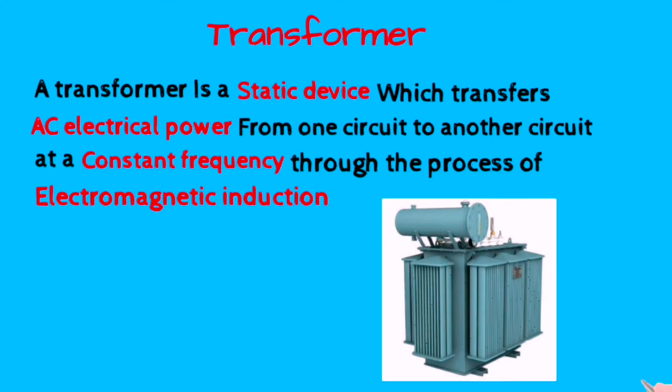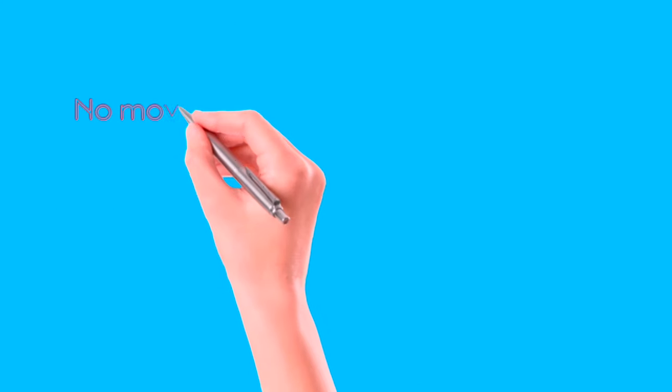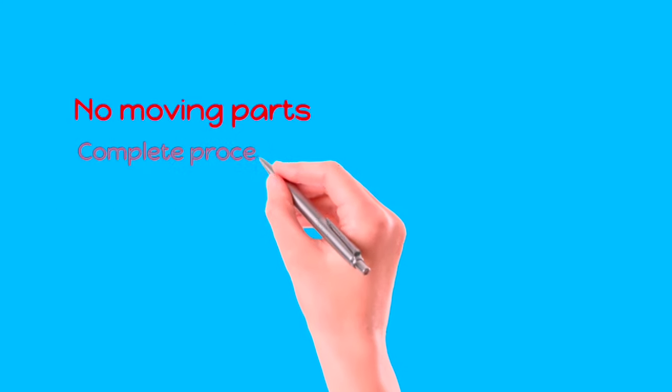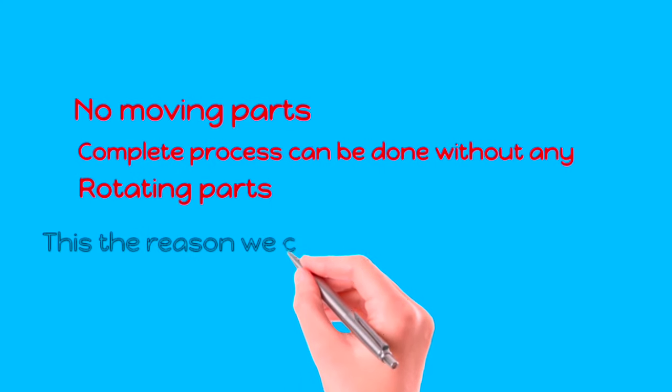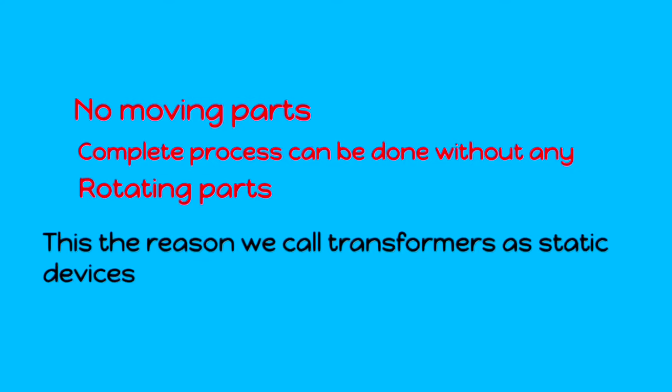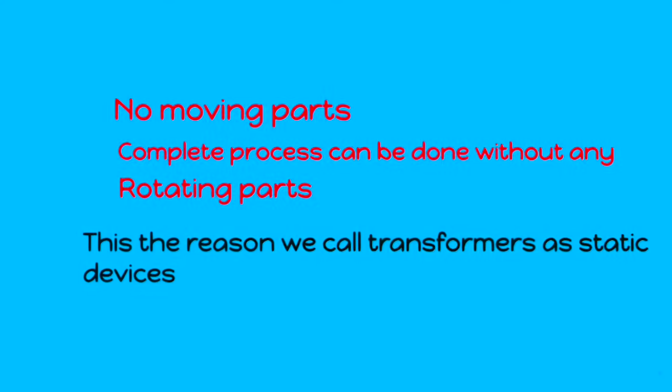Now let's see why a transformer is called a static device. The transformer has no moving parts and the complete process can be done without any rotating parts. So this is the reason we call transformer a static device.